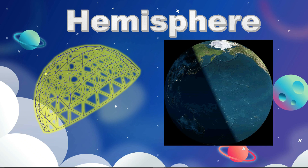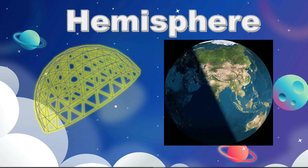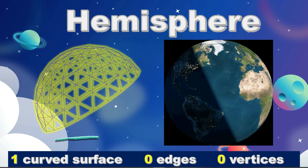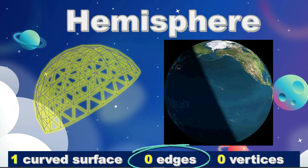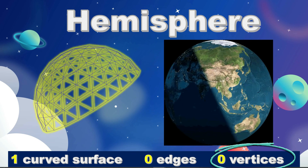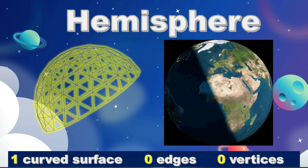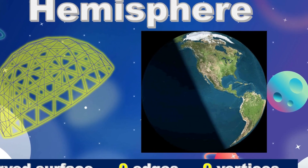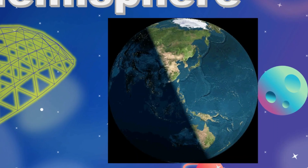Hemisphere. Hemisphere is the half of Sphere. Hemisphere has one curved surface, no edges, no vertices. An example of Hemisphere is half of the Earth. Half of the Earth is morning and the other half is night.